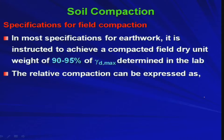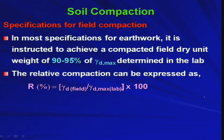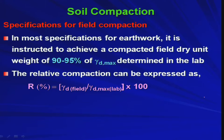The relative compaction R (in percentage) is expressed as: R = (gamma D field / gamma D max) × 100%. The gamma D field is the dry unit weight observed in the field and gamma D max is from the laboratory. This should be 90 to 95 percent; if you achieve 95 percent or more, it is considered very good compaction.